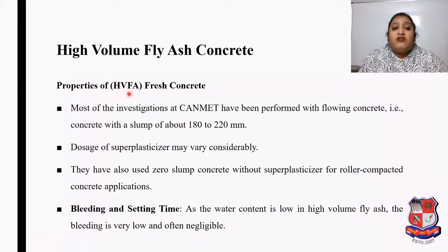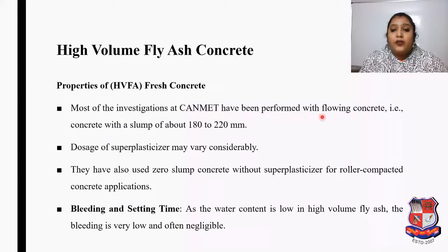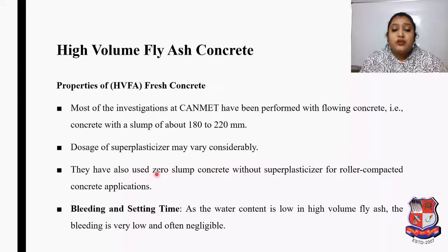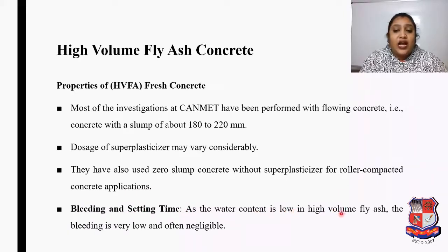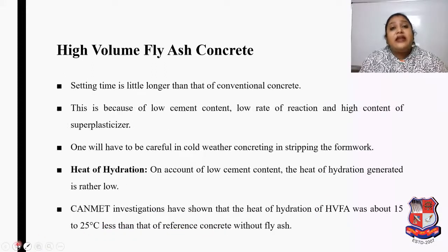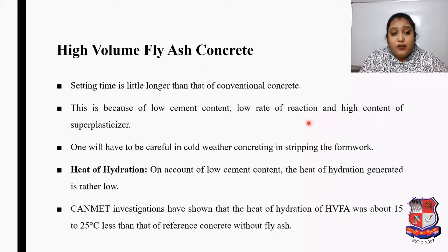For fresh concrete prepared from high volume fly ash, most investigations at CANMET were performed with flowing concrete — that is, concrete with a slump of about 180 to 220 mm. Dosage of super plasticizer may vary considerably. They have also used zero slump concrete without super plasticizer for roller compacted concrete applications. Regarding bleeding and setting time, as the water content is low in high volume fly ash concrete, bleeding is very low and often negligible. Setting time is slightly longer than conventional concrete due to low cement content, low rate of reaction, and high super plasticizer content. Care must be taken in cold weather concreting when stripping formwork.